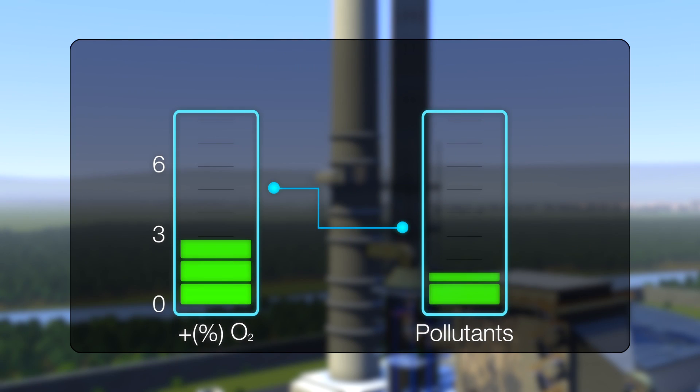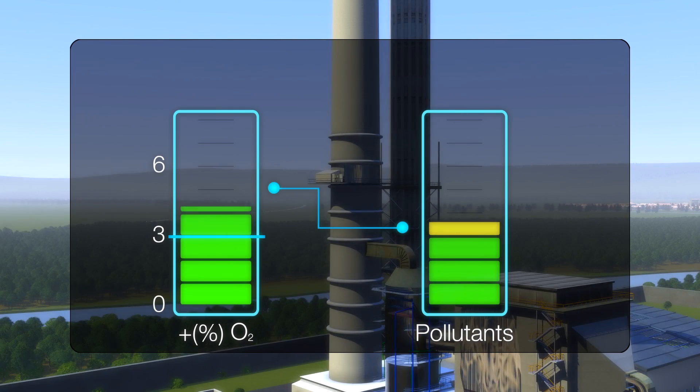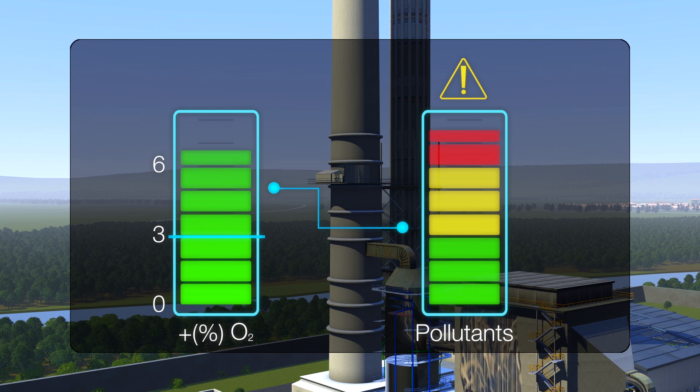If a plant has a reference value of 3% oxygen, for example, a reading of 6% oxygen will mean the pollutant gas concentration is exceeding the permitted limits and needs to be reduced.